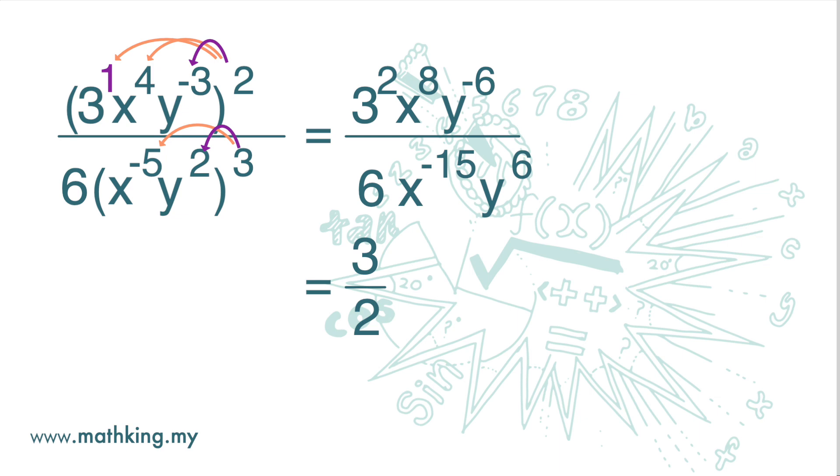Now for index number base x, we have 8 minus negative 15, which is 23. And for index number base y, it's negative 6 minus 6, and that gives us negative 12.